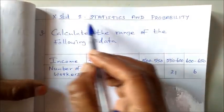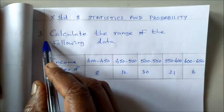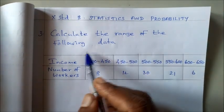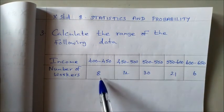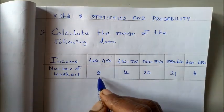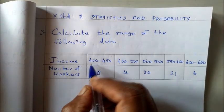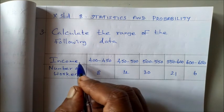This is 10th standard, 8th unit, statistics and probability, third term. Calculate the range of the following data. The data consists of income and number of workers. Income, number of workers. Range. We don't have to say that income is x data.